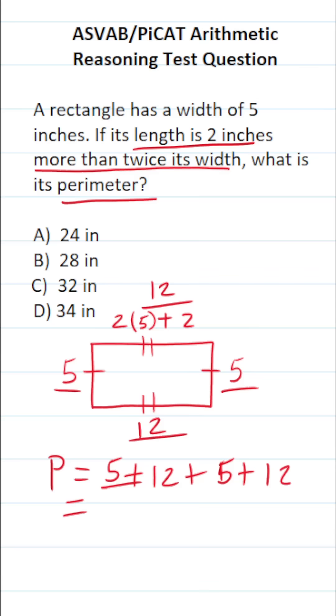Alright, so let's work this out. 5 and 5 is going to be 10. 12 and 12 is 24. 10 and 24 is 34. So the perimeter of this rectangle is going to be D, 34 inches.